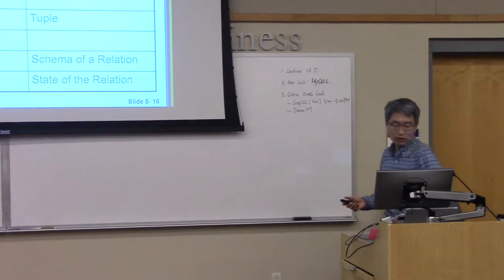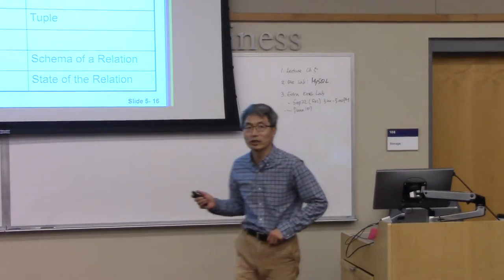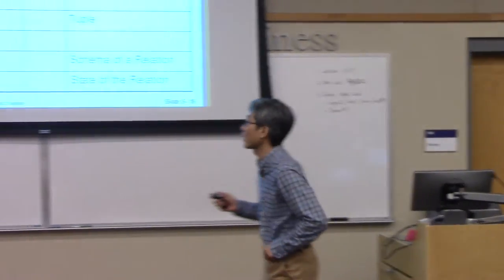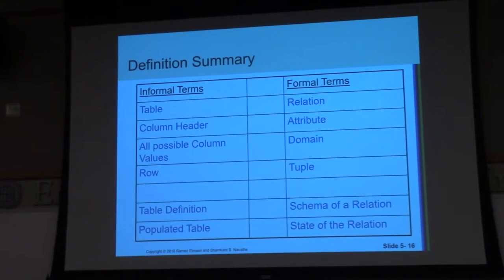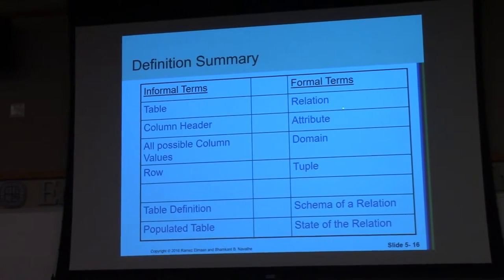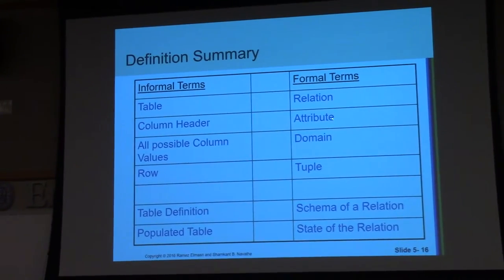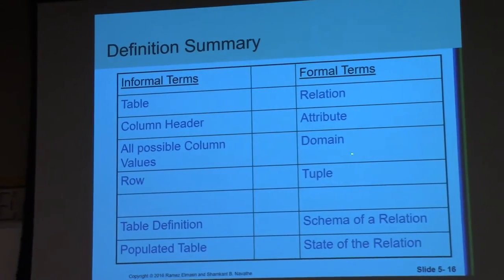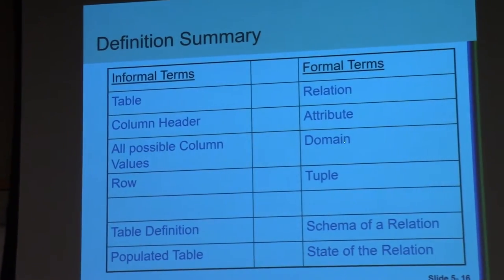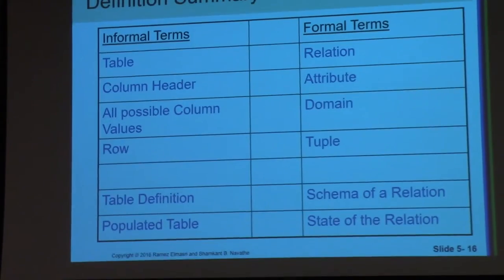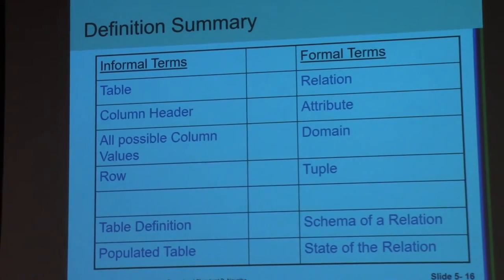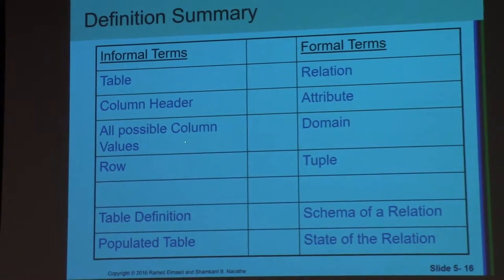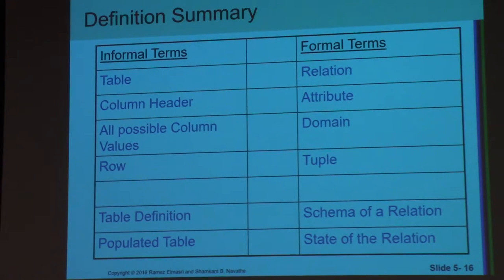This is a summary of the definitions we discussed last time — the relational database terminology. We discussed what a relation is: it consists of a group of attributes, and each attribute is based on a domain in the relational model. However, in real DBMS, we use data type instead of domain, because domain is not practical.